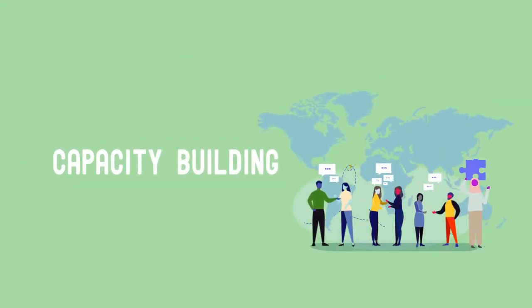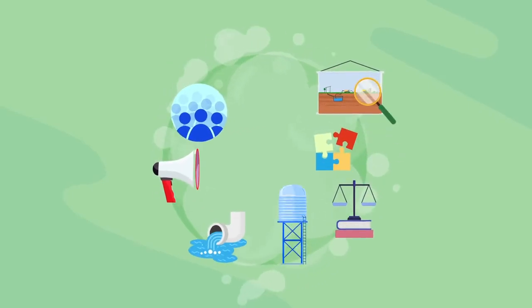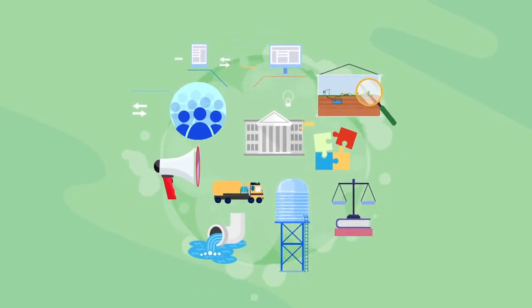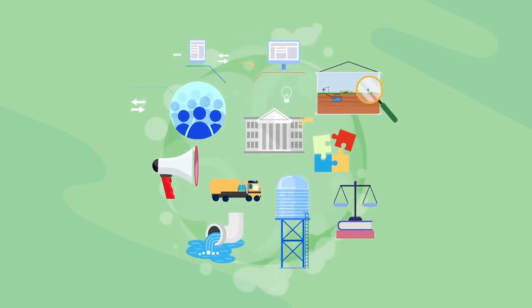The fifth and final component, capacity building, ensures there is institutional and human capacity to provide wash services. With proper capacity, public and private institutions can fulfill their responsibilities, and institutions and stakeholders can continuously renew and adapt wash services.